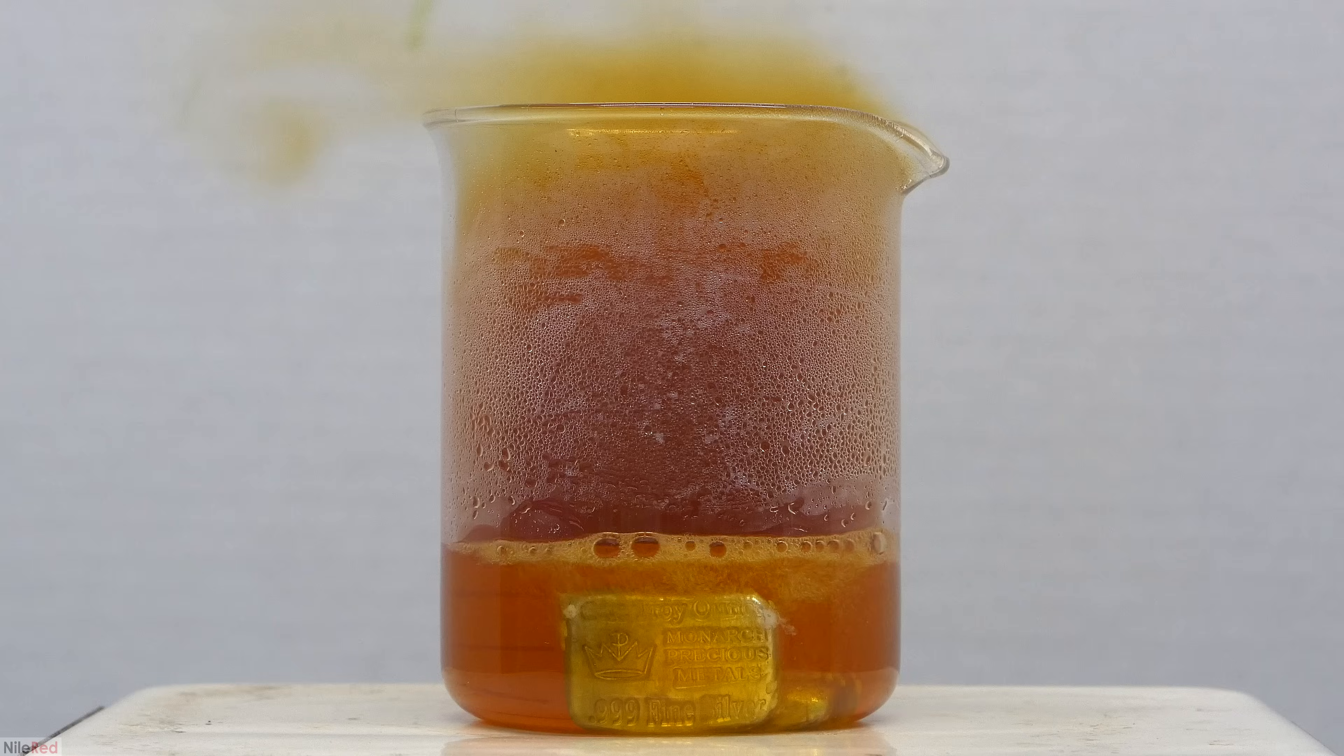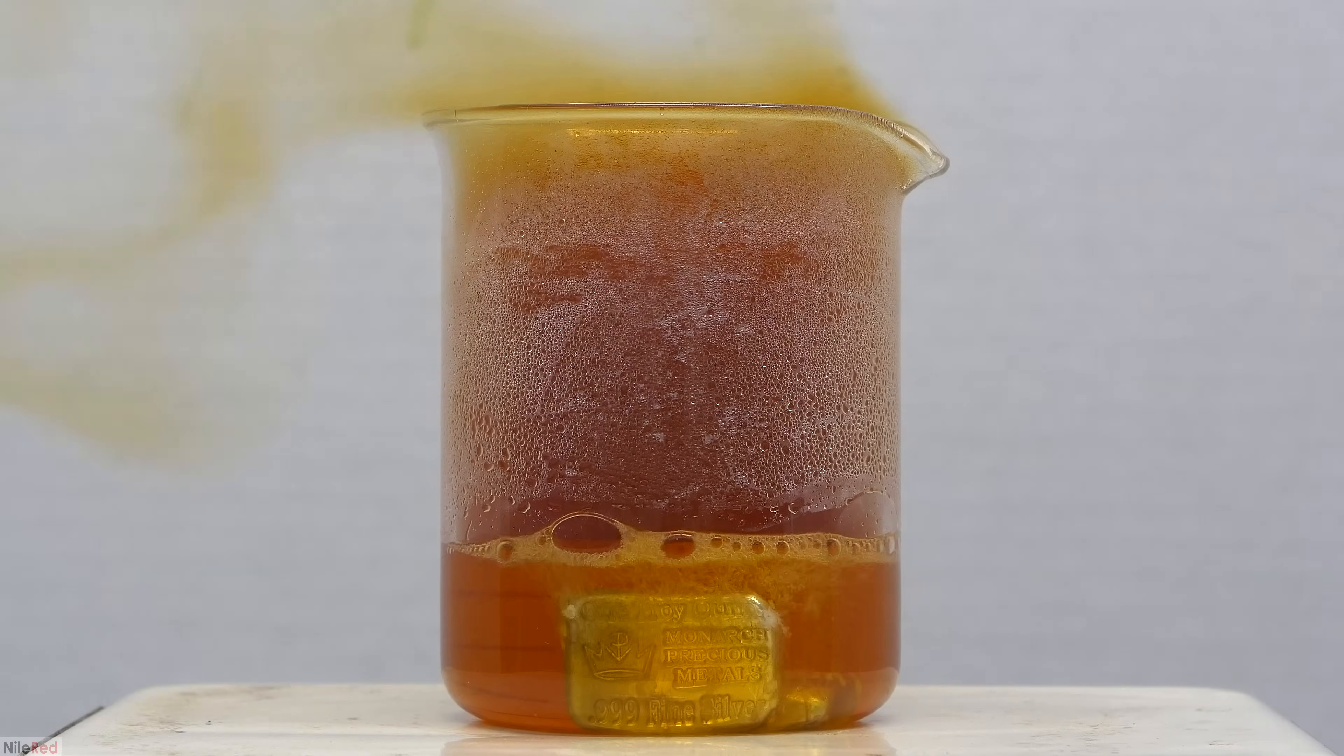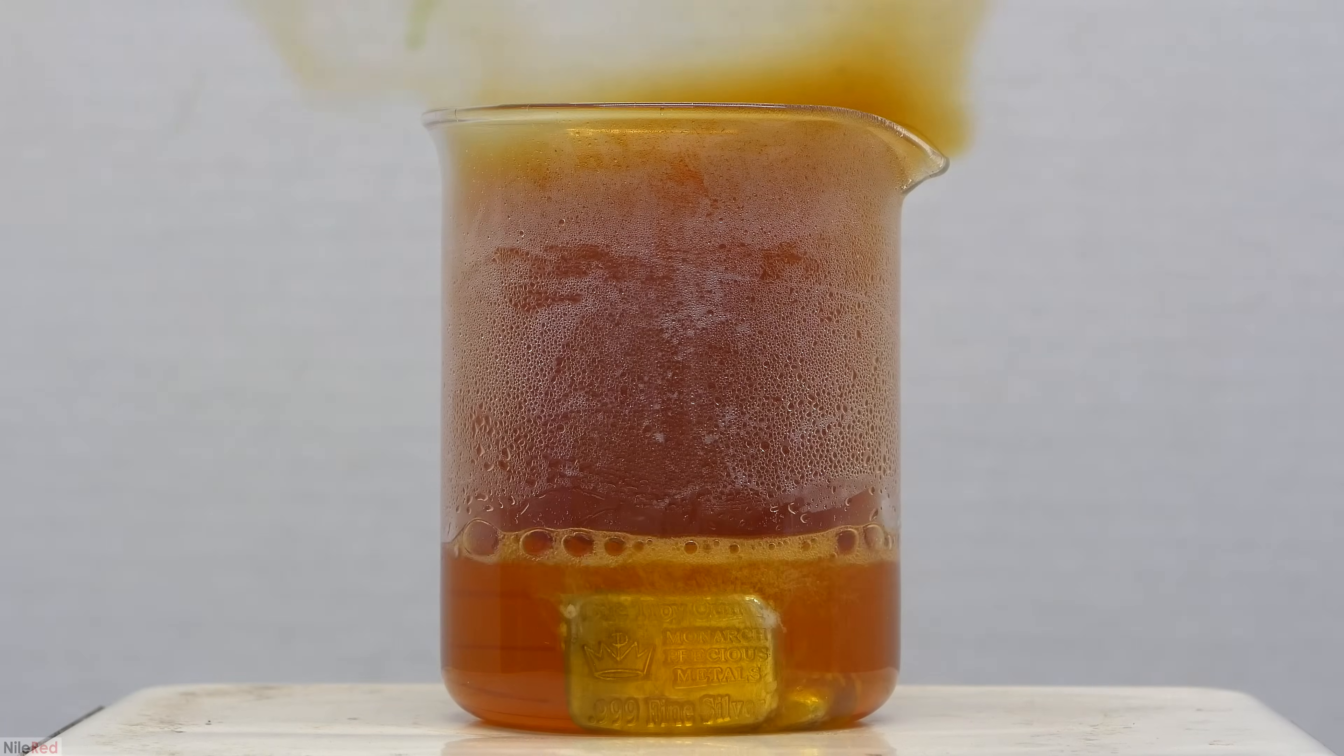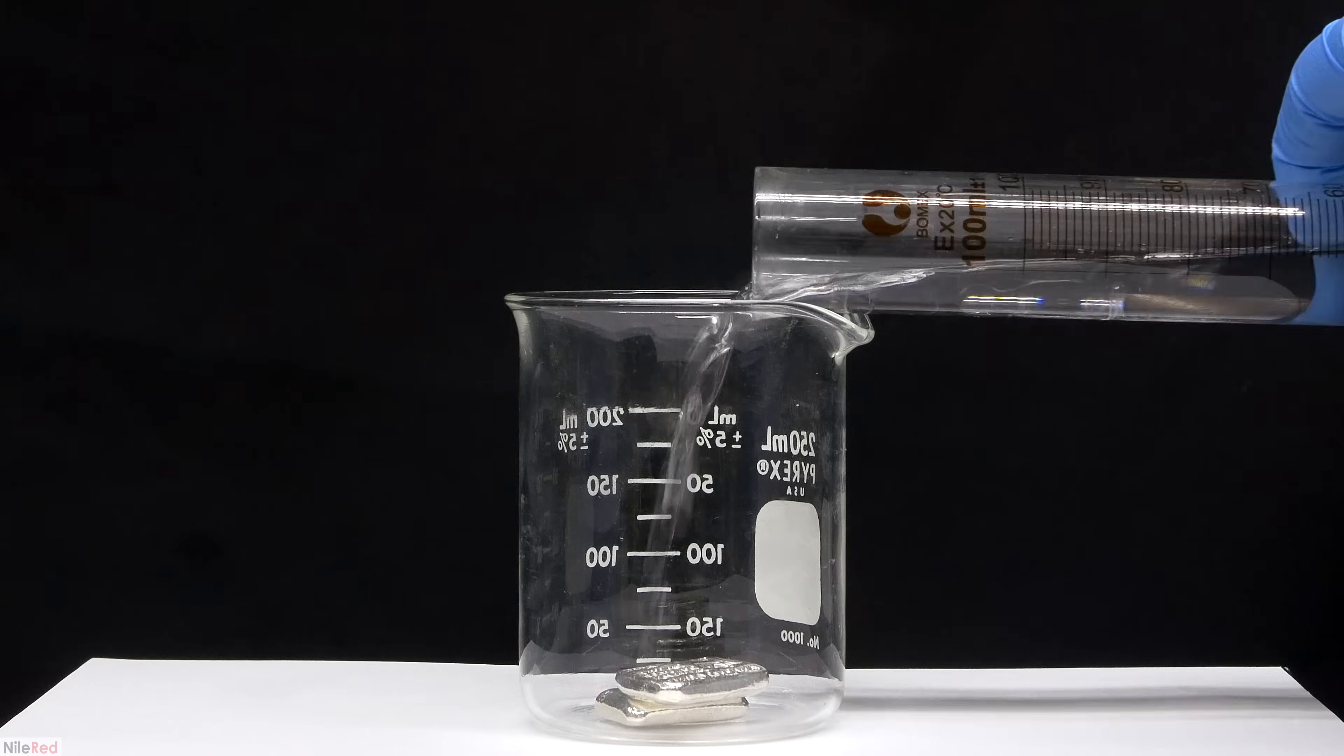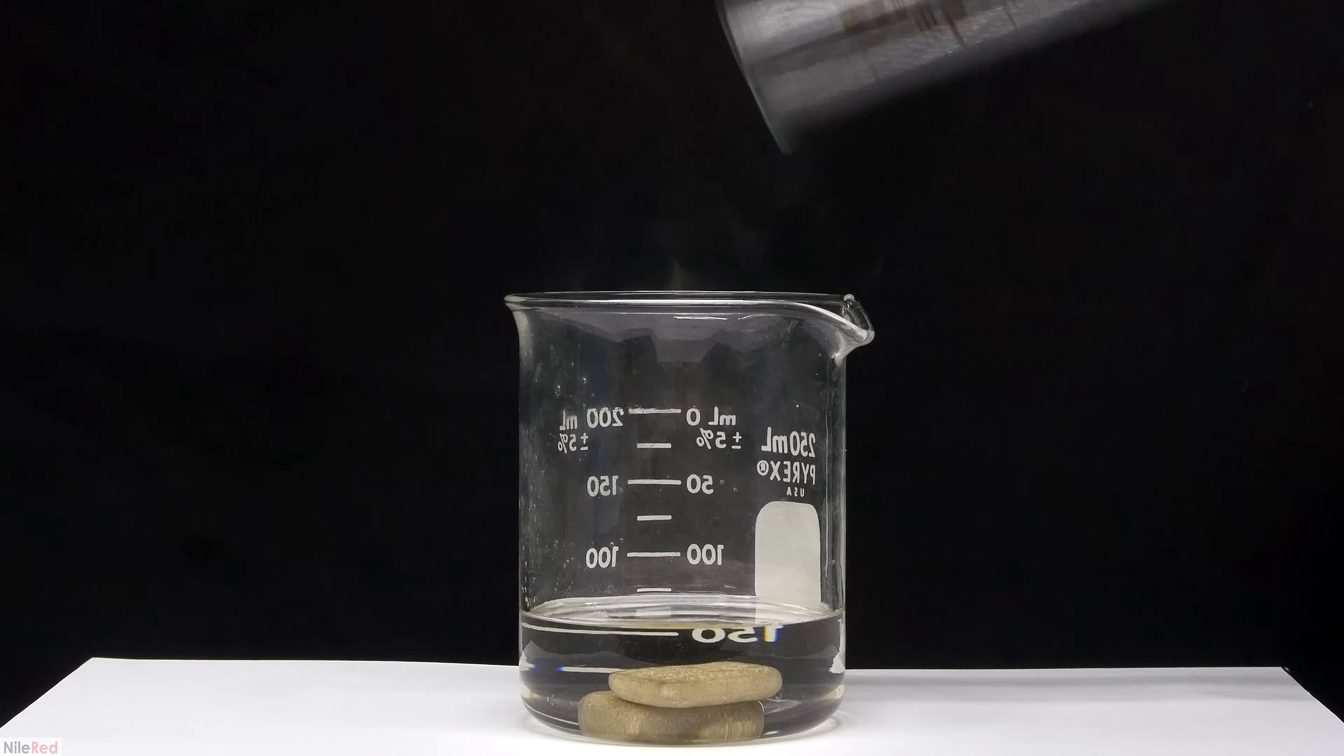Today we're making silver nitrate, which is a salt of silver metal. Silver nitrate has historically been used as an antiseptic and has a few uses in chemistry. I don't have plans to use it in a synthesis reaction, but I do want to carry out some demonstrations.